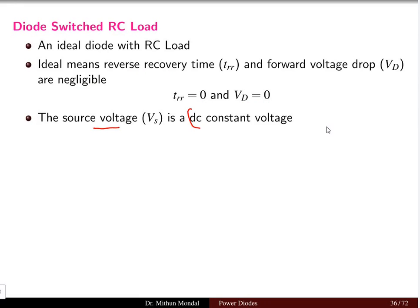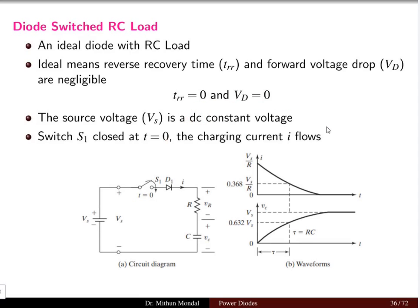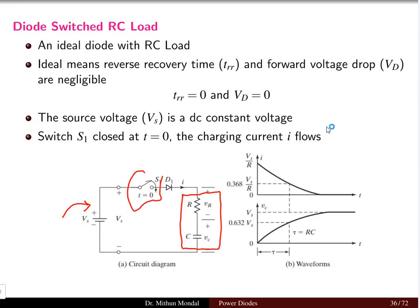The source voltage is a constant DC voltage, so the input voltage VS is constant DC. The circuit has a diode D1 connected with a DC source VS and an RC load. There is a switch in the circuit which is closed at time t equals zero, after which the charging current flows. Since the diode is ideal, there is no forward voltage drop and the current starts flowing in the circuit.